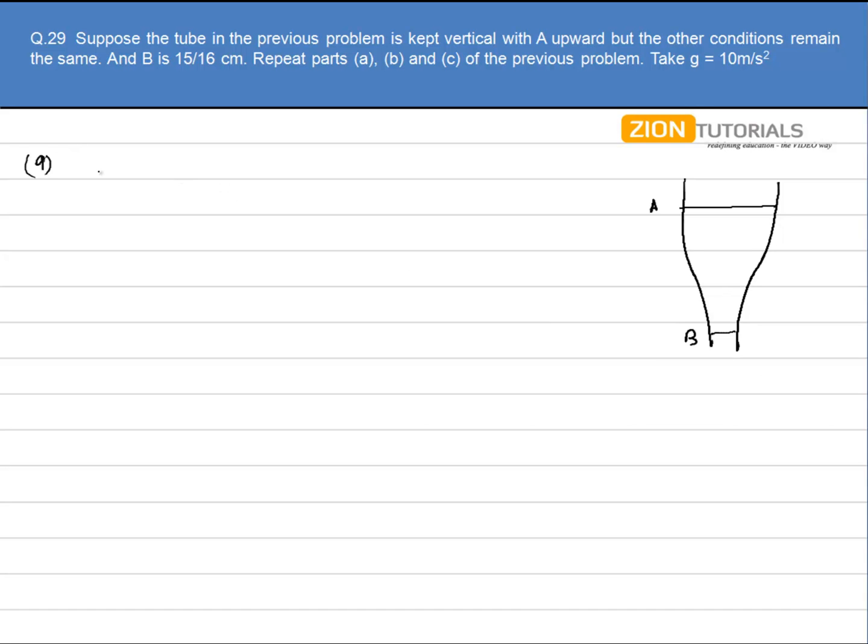Now again, the first part is I have to calculate the velocity at A. We know that volume is given by area of cross section into the velocity. Now since the volume flow rate will be same...